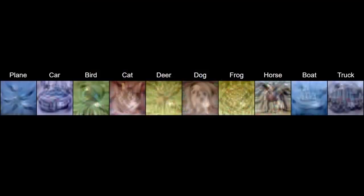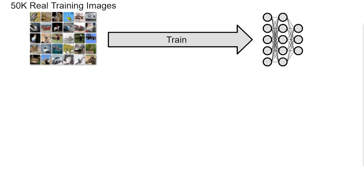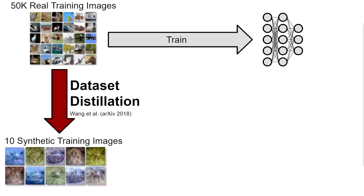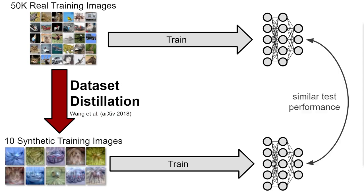What if, instead, we were to take our original dataset and learn from it a set of representative synthetic images — as few as 50, 10, or even just one image per class? This exactly describes the task of dataset distillation. Rather than training a model on the largely redundant real dataset, Wang et al. originally proposed to instead distill the dataset into a much smaller collection of synthetic images, such that a model trained on this synthetic set will have similar test performance to a model trained on the full dataset.